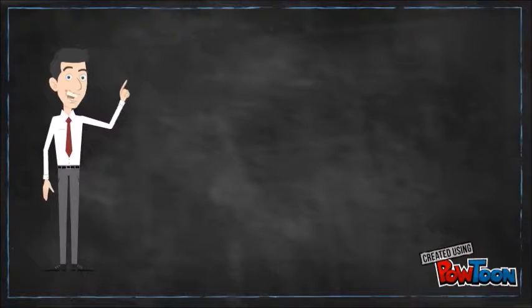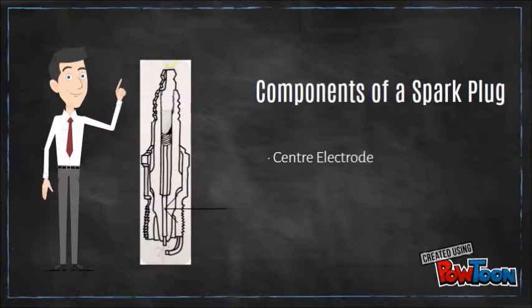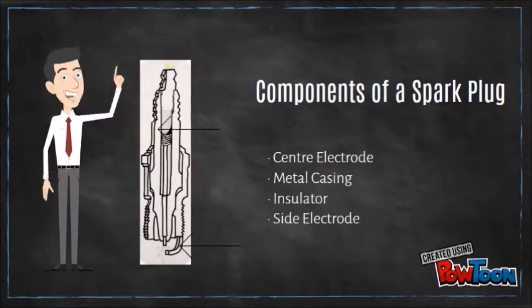The spark plug is made up of four main components: the center electrode, a metal casing, an insulator, and a side electrode.